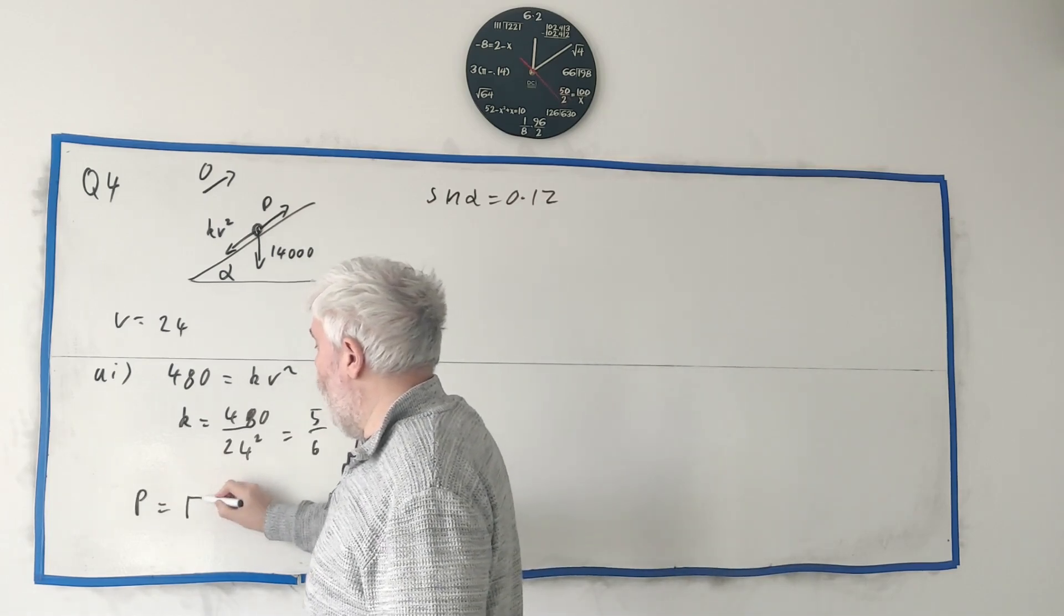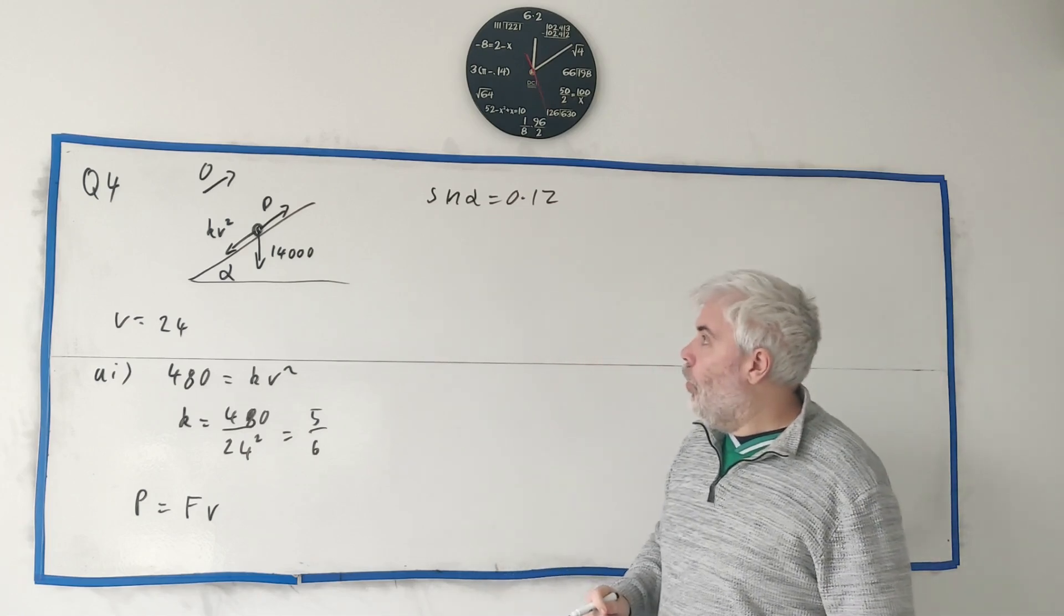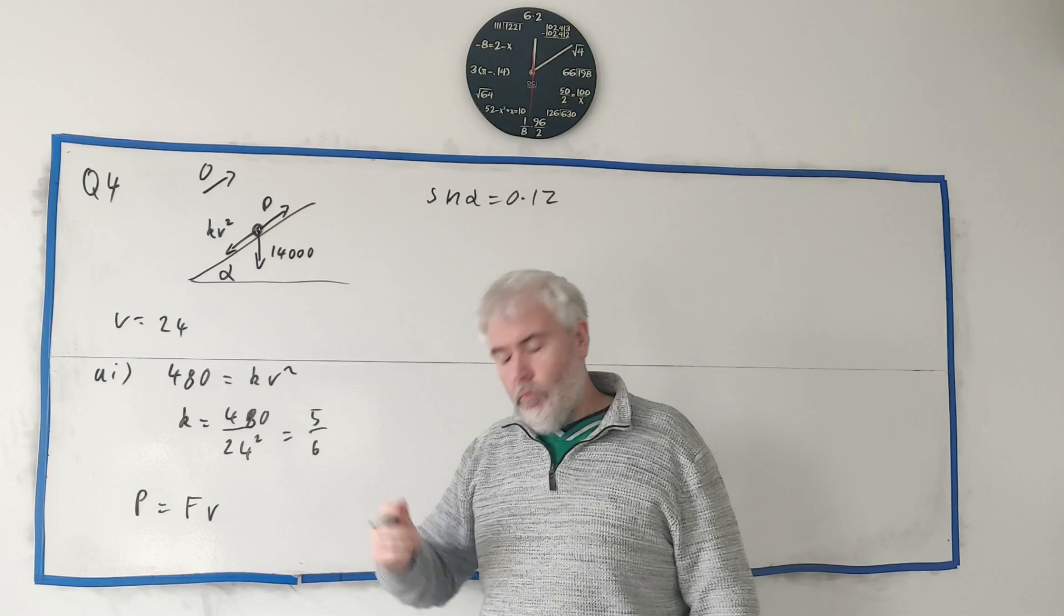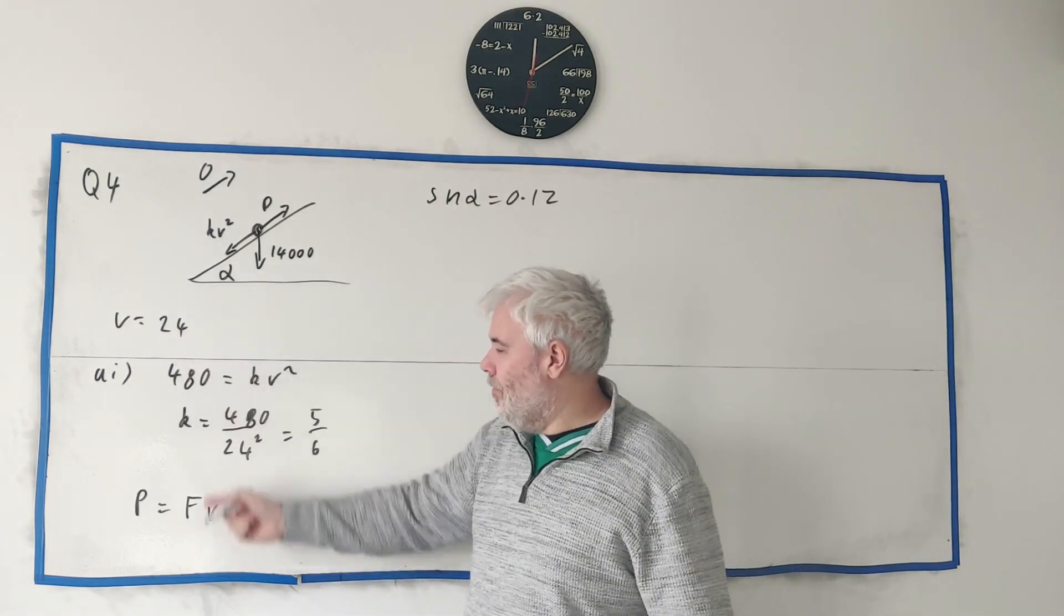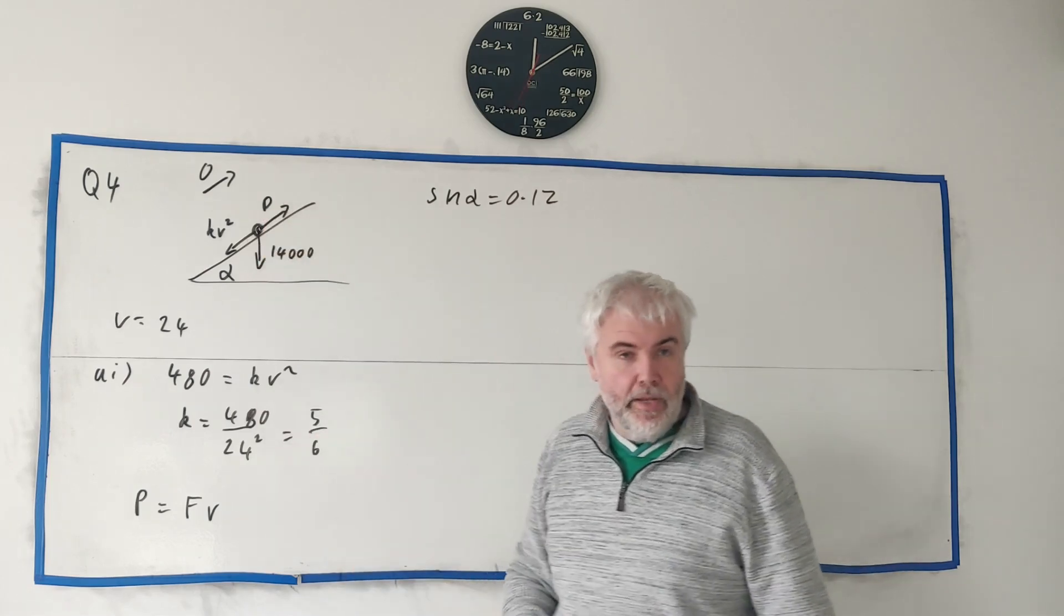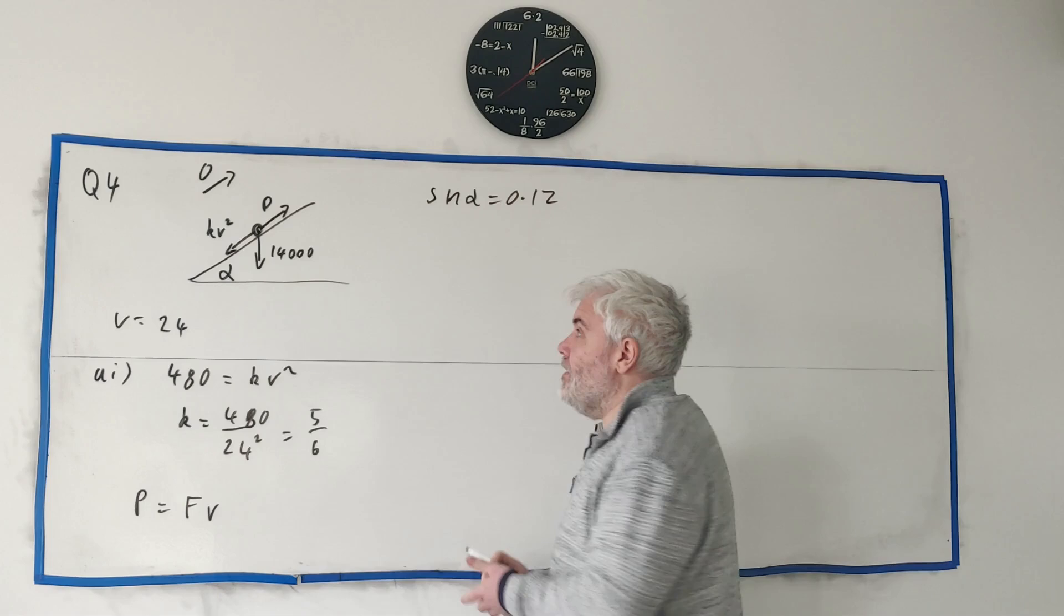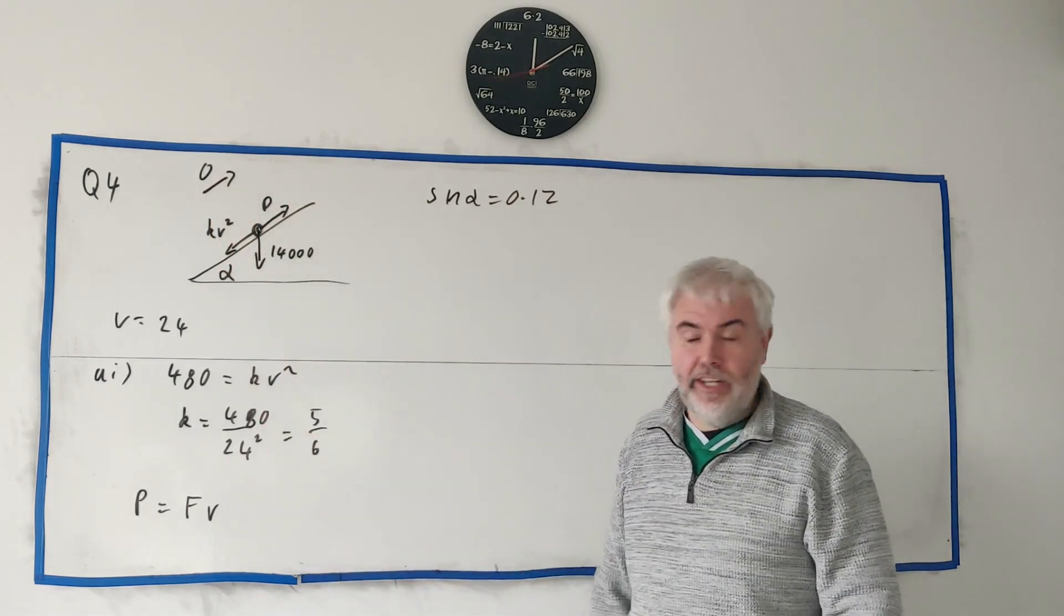Power equals force times speed. So they tell us the power. Sorry, we need to find the power. I'm sorry. So to find the power, we know the velocity. We just need to find this force here. And let's get to that. The forces must be equal because the acceleration is zero. That's the only real trick here.